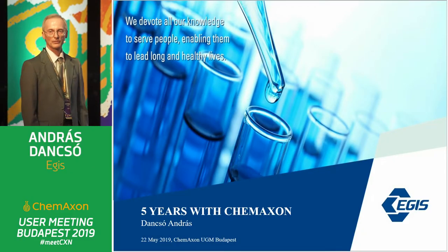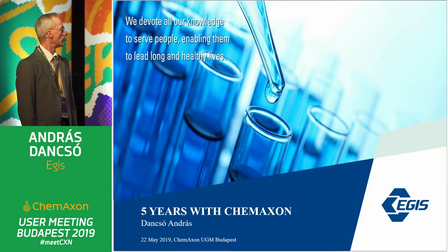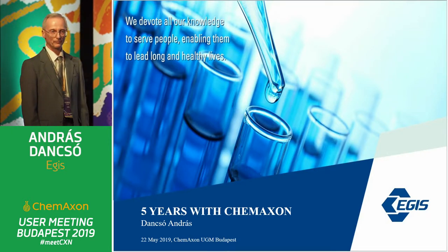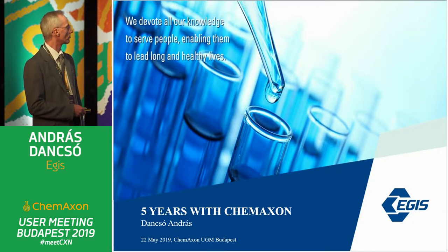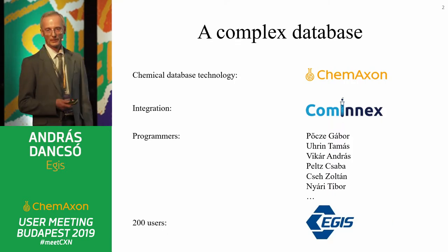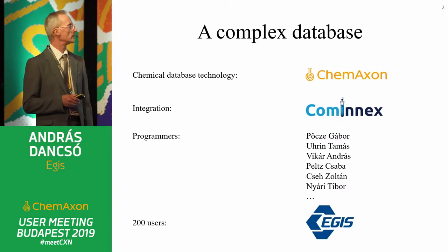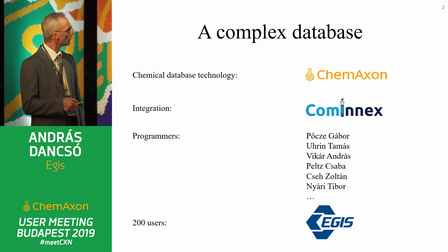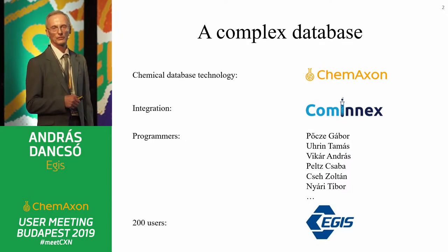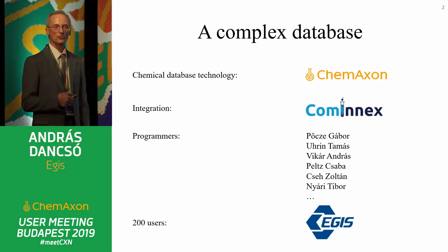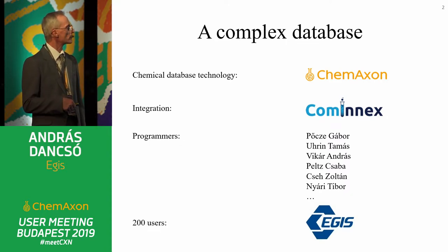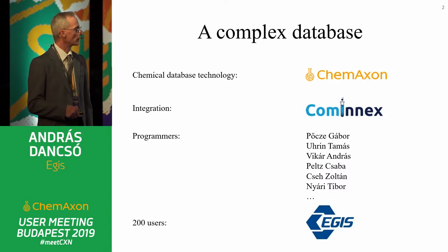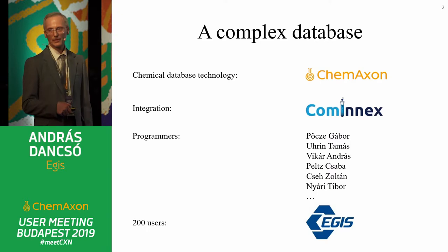This presentation is about a database which we use in Aegis, and it's based on the ChemAxon platform. It has been running for five years. This is a complex database which needs much work to bring together. The JChem platform makes it possible to store chemical structures and reactions and to search them. There was a need for integration, which was done by Cominex — excellent programmers. And Aegis provided the users.